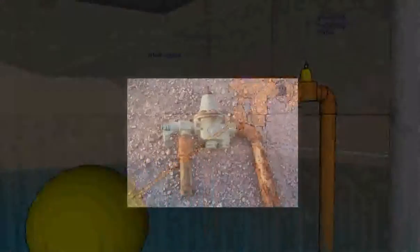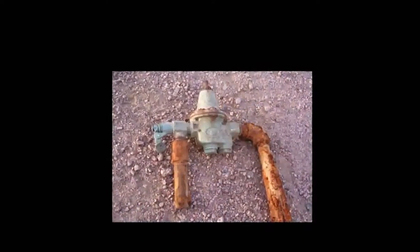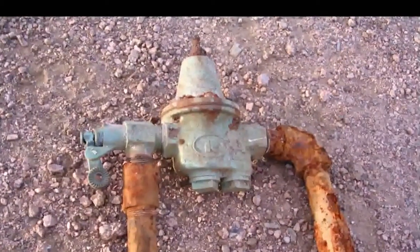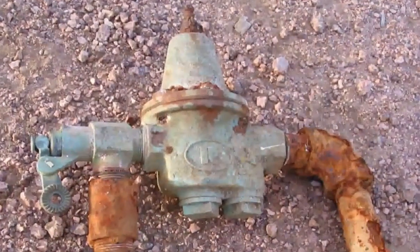Over time, float valves corrode, deteriorate, and fail. Failure can result in water continually feeding into the cistern and in turn drain Mountain Mutual storage tanks.